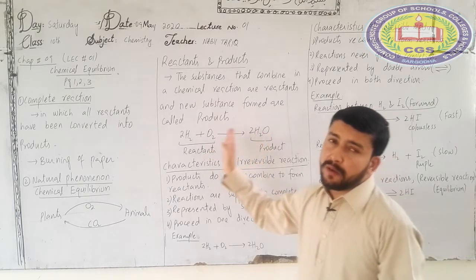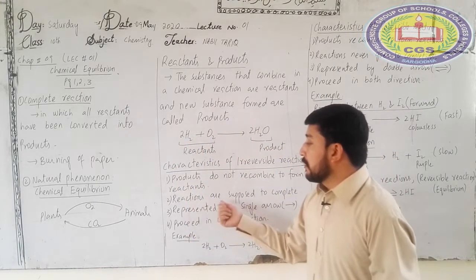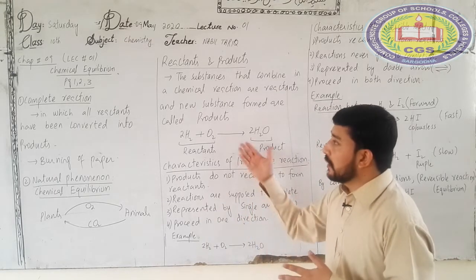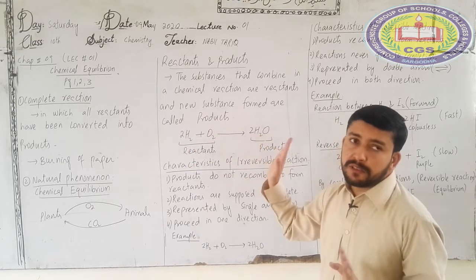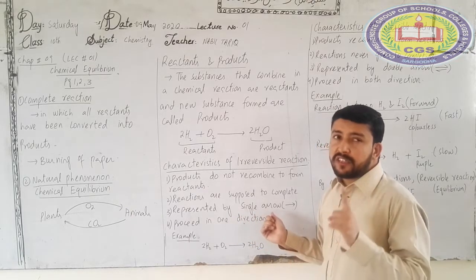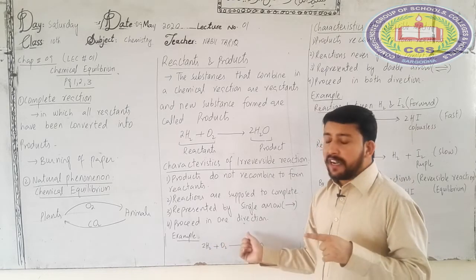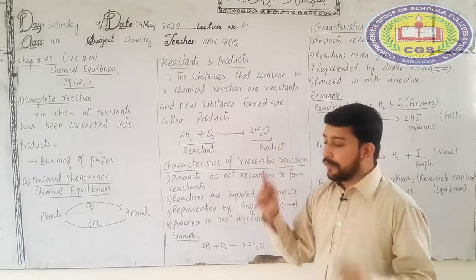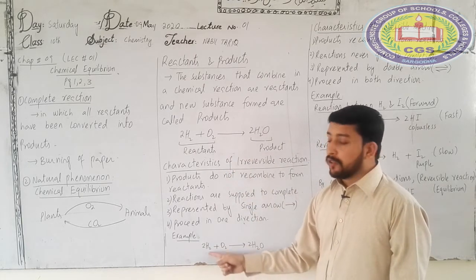Hydrogen gas and oxygen gas are not lost. Reactions go to completion. Reactions are represented by a single arrow — it is a single direction, based on the reactants converting to products. For example, there is a single direction.